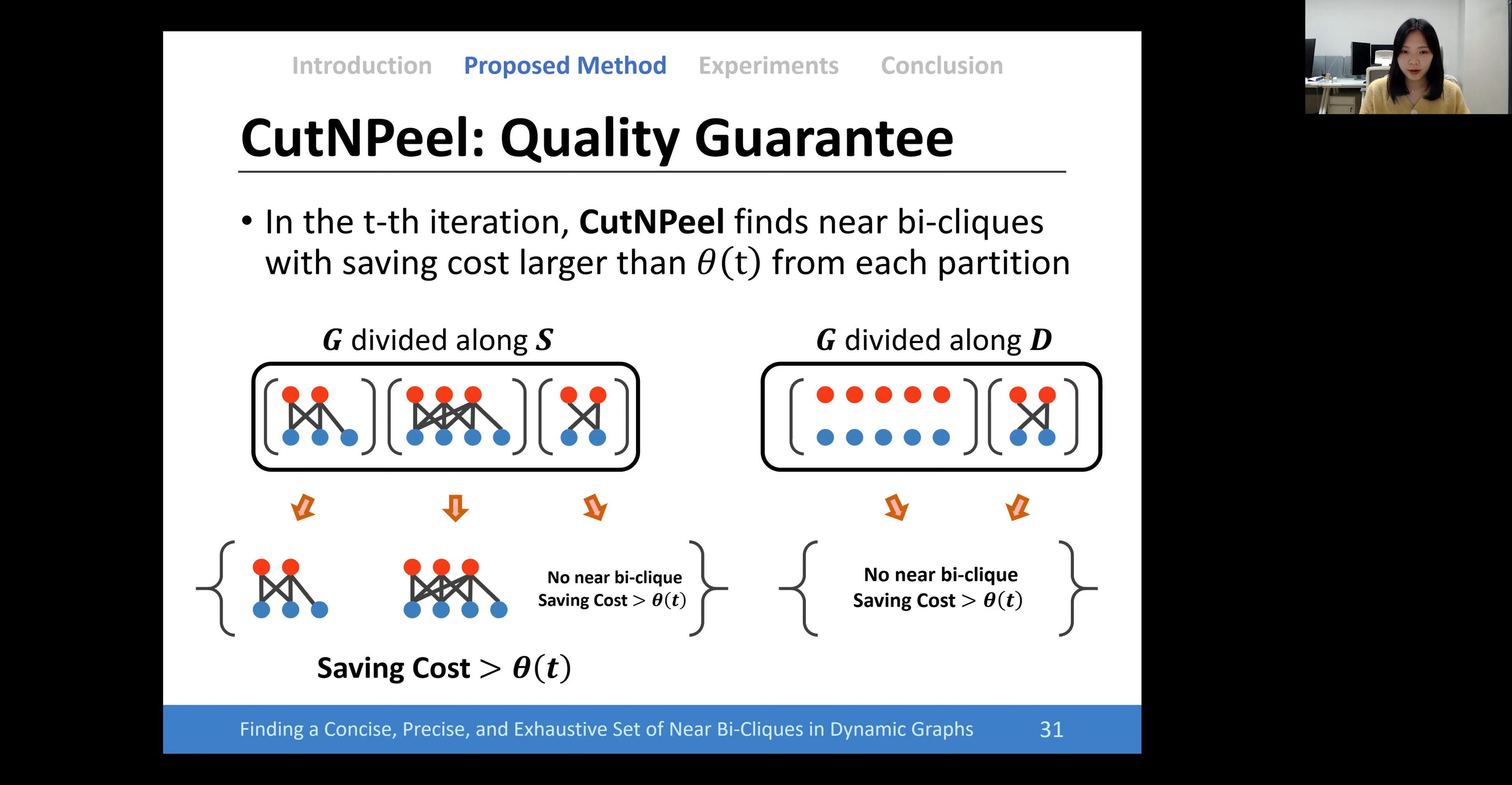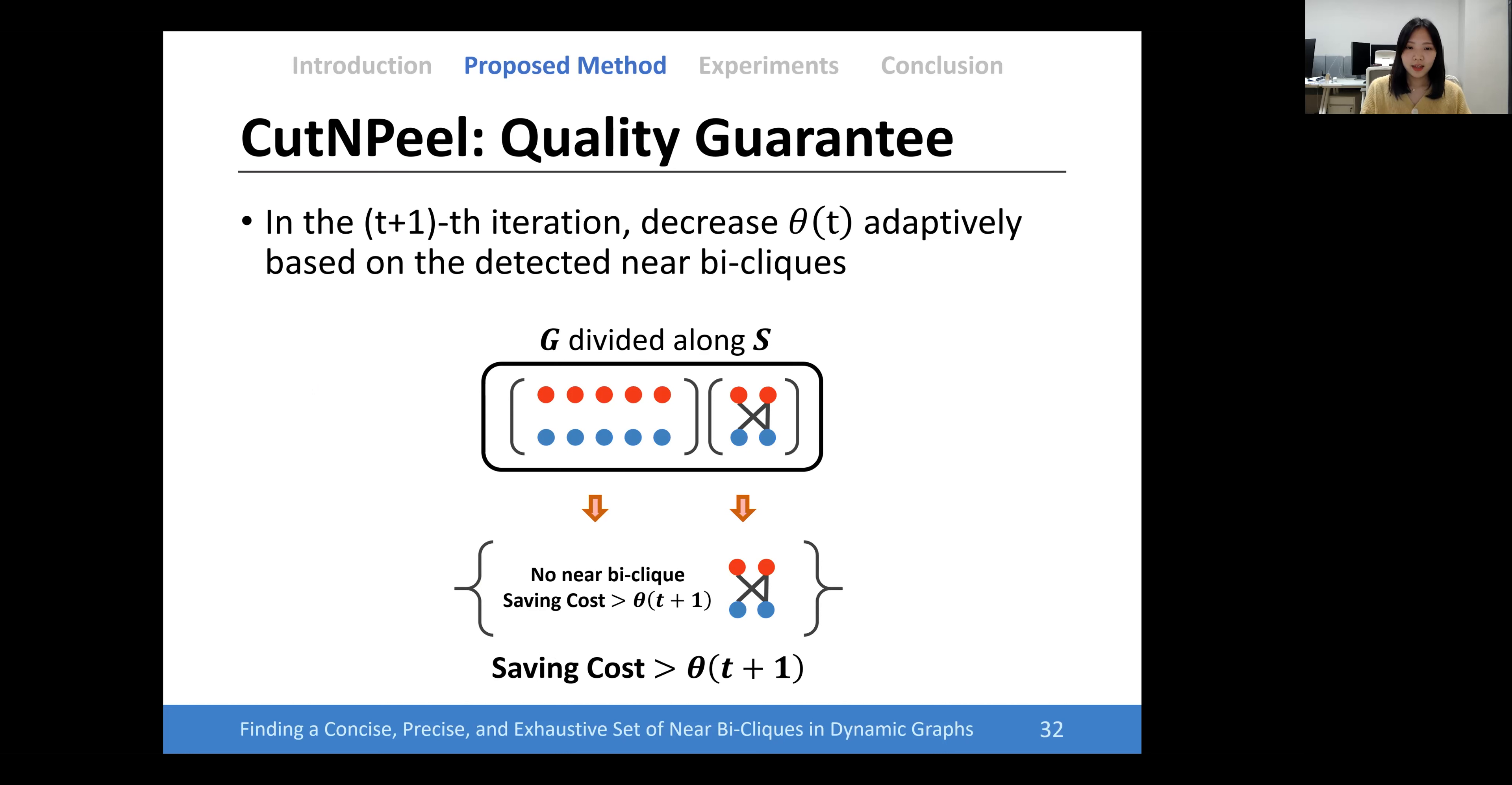In each iteration, to guarantee the quality of detected near bi-cliques, Cut and Peel finds near bi-cliques to have the saving cost larger than the threshold, τP, from each partition. In the next iteration, it decreases thresholds adaptively based on the detected near bi-cliques.